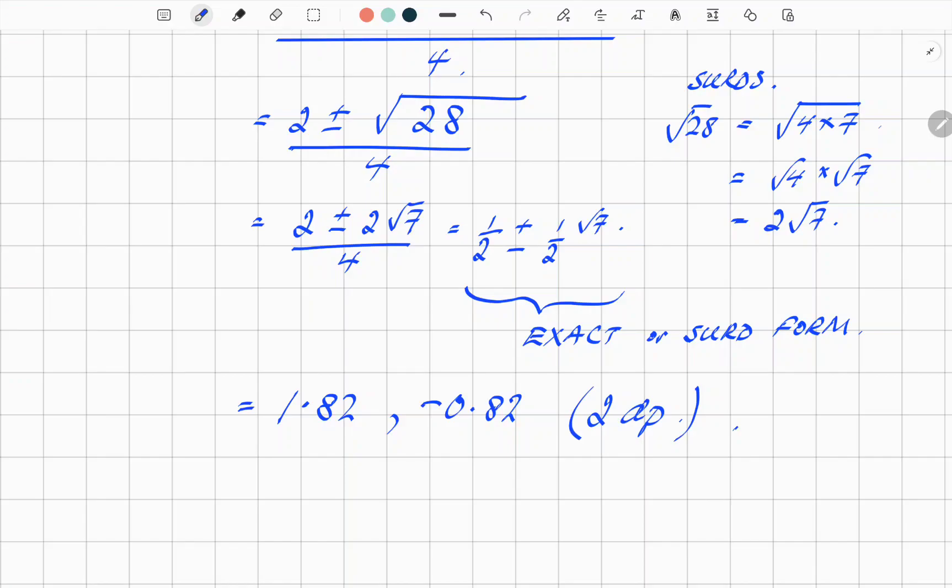So in a non-calc paper you're likely to have the exact or surd form, and the decimal form there is going to be usually in a calc paper. So the two forms.